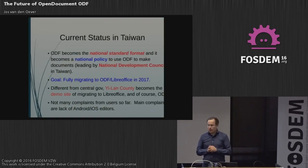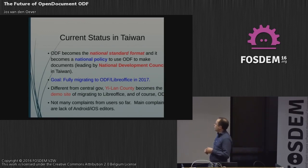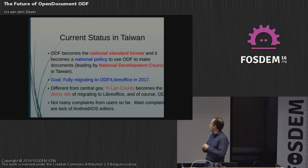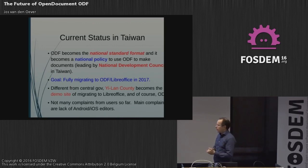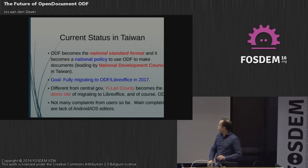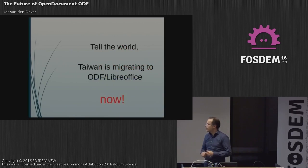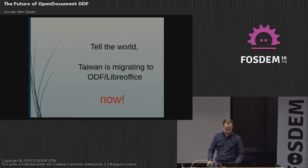There is also good news. The Italian Army is switching to LibreOffice and standardizing on the ODF file format — partly due to security-related requirements from their heavy equipment. The LibreItalia Association is very active in getting people to switch to ODF. Outside of Europe, the current status in Taiwan is very good: ODF becomes the national standard format, a national policy to use ODF, and they're aiming to fully migrate to ODF and LibreOffice in 2017.